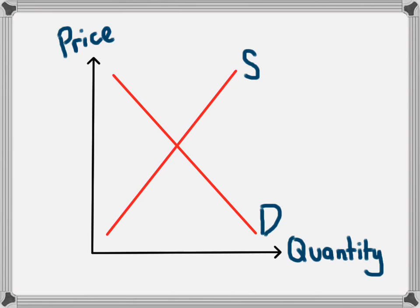It's easy to see that there is only one point at which both the buyers and the sellers agree on a price. In this case, it is P1.